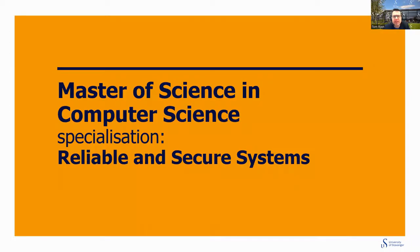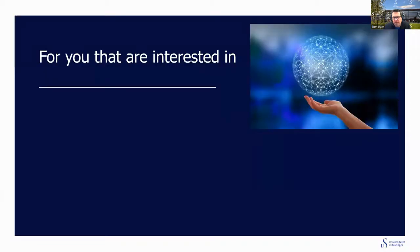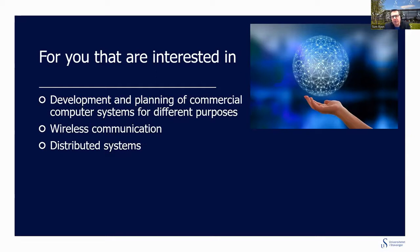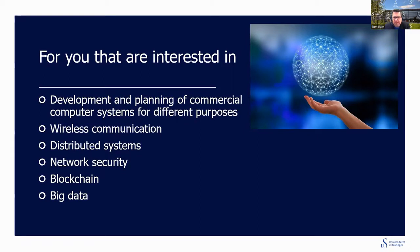We have two different specializations in Master of Science in Computer Science. The first one is called Reliable and Secure Systems. This is a specialization for you that are interested in the development and planning of commercial computer systems for different purposes — wireless communication, distributed systems, network security, blockchain technology, big data, machine learning, AI, artificial intelligence, and so on.